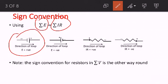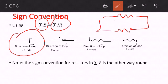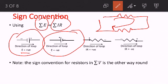We look at this first diagram here. You can see that the direction of your loop — in Kirchhoff's rule, we take a loop, usually in a clockwise direction. So if the direction of your loop is going from negative to positive potential, your E will be positive. If the direction of your loop is going from positive to negative potential, your E is going to be negative.